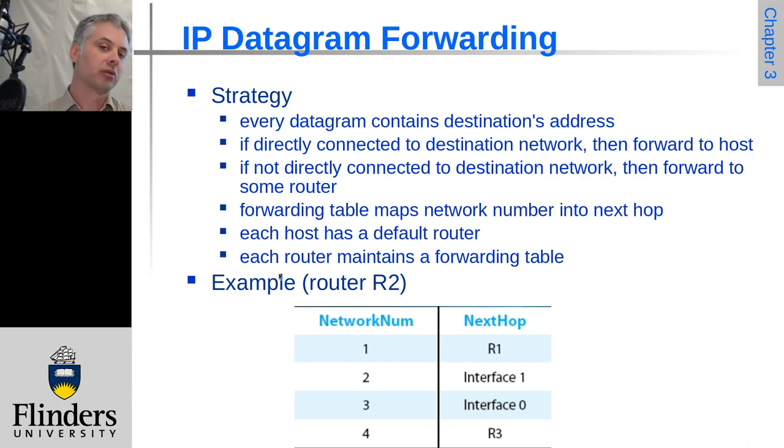And so each router, in effect, behaves in the same way. It knows where to find different networks so they can forward things on, and it knows where its default route is.